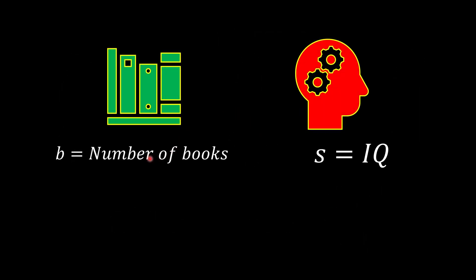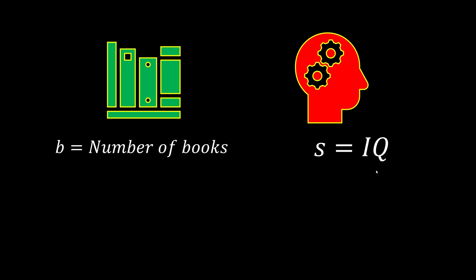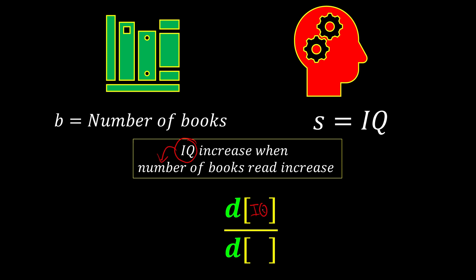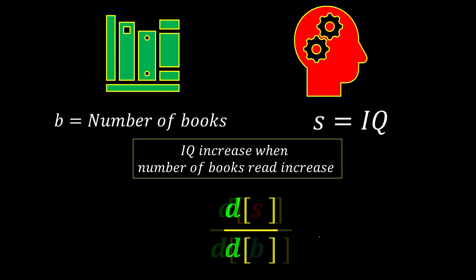Now let's say B represents the number of books and S represents your IQ. Your IQ increases when the number of books you read increases — the more books you read, the smarter you get. Since your IQ depends on how many books you read, we can express this as ds over db.